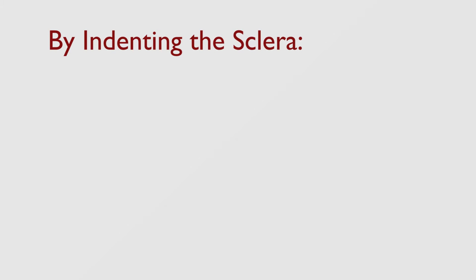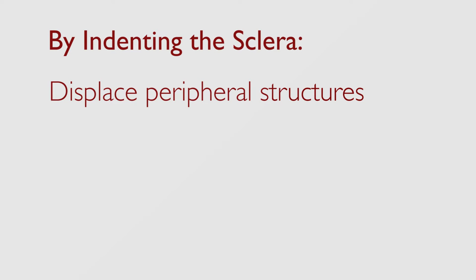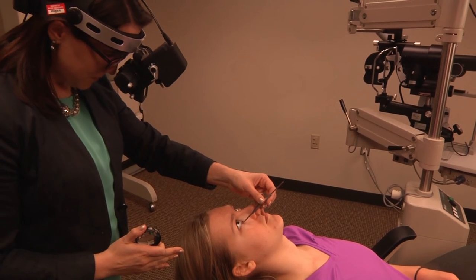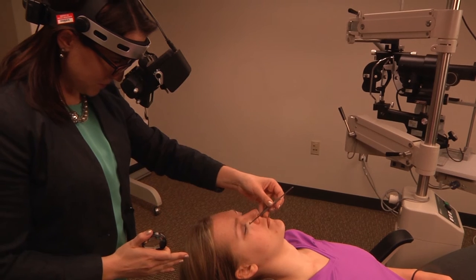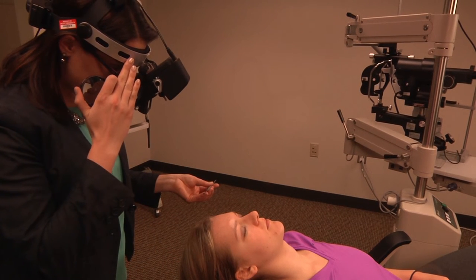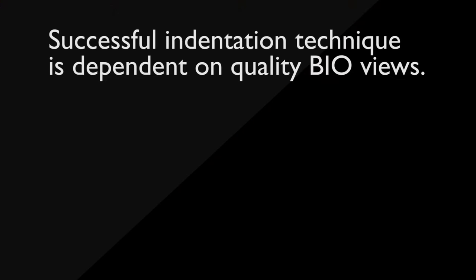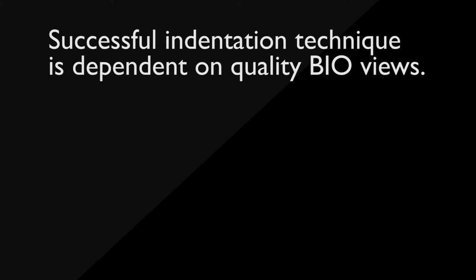By indenting the sclera, the practitioner can displace peripheral structures inward, allowing for binocular, stereoscopic views. Areas of the fundus can be seen from different angles by dynamically applying pressure or rolling the retina. It is important that anyone attempting scleral indentation first become proficient with obtaining peripheral retinal views with a BIO. Successful indentation technique is dependent on quality BIO views.